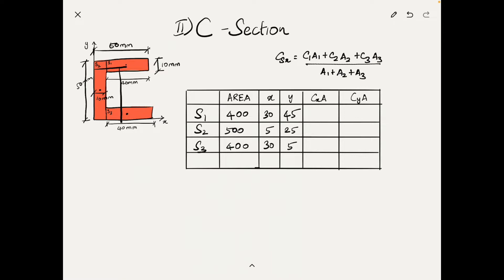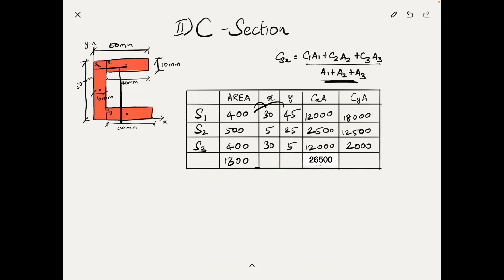We multiply the X centroidal coordinate with the respective area. For S1: 30 × 400 = 12,000. For S2: 2,500. For S3: 12,000. Multiplying Y coordinates with areas: 18,000 for the first section, 12,500 for the second, and 2,000 for the third. The total area is 400 + 500 + 400 = 1,300. Summing ΣCxA = 26,500. Summing ΣCyA = 32,500.